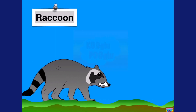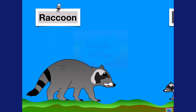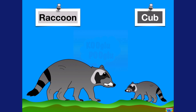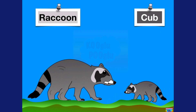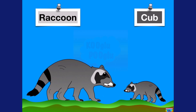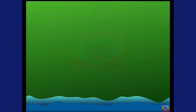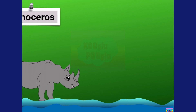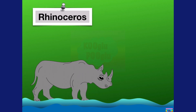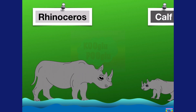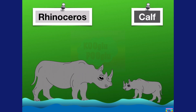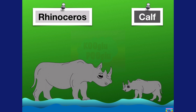Here we have a raccoon, and a baby raccoon is called a cub. Now we have a rhinoceros, and a baby rhinoceros is called a calf.